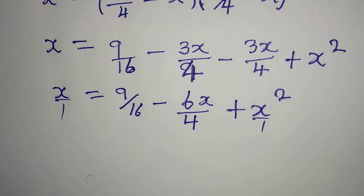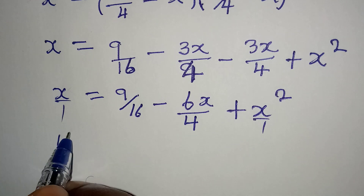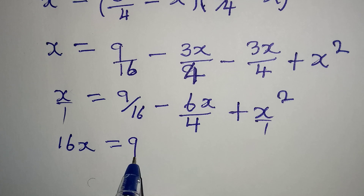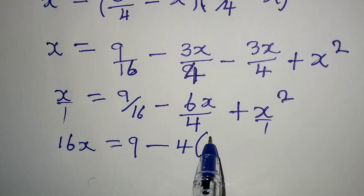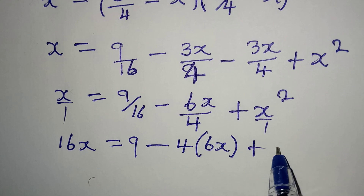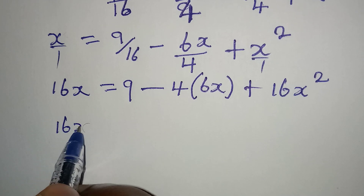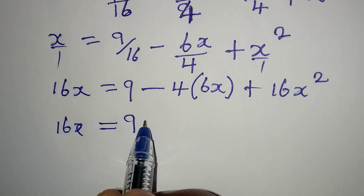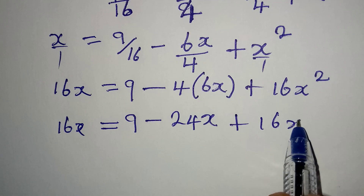We find the LCM which is 16, and multiply everything by 16. On the left side we have 16x. On the right side, 16 cancels with 16 to give 9, then 4 goes into 16 to give 4 times 6x which is 24x, then plus 16x squared. So we have 16x equals 9 minus 24x plus 16x squared.